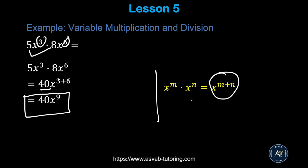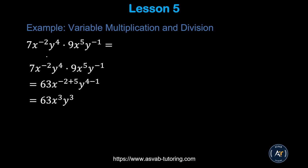In this next problem we have 7x squared times y to the fourth power, times 9x to the fifth power times y to the negative first power. You multiply the numbers first: 7 times 9 is 63. Then add exponents for x: 2 plus 5 gives 7 — wait, negative 2 plus 5 is 3. For y: 4 minus 1 gives 3. So the answer is 63x cubed y cubed.